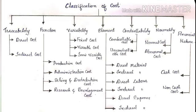Students, this is the chart explaining the classification of cost. Let's go through the chart. First, on the basis of traceability, cost may be classified into direct cost and indirect cost. Then, on the basis of function, cost may be classified into production cost, administration cost, selling and distribution cost, and research and development cost — four main categories.